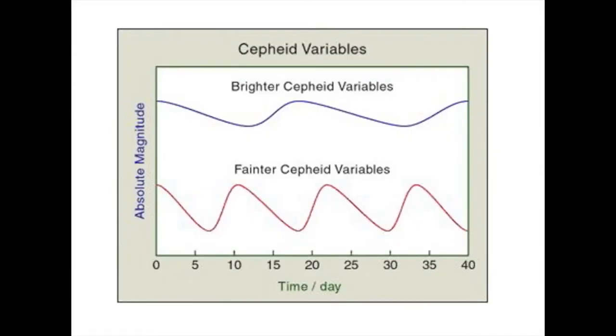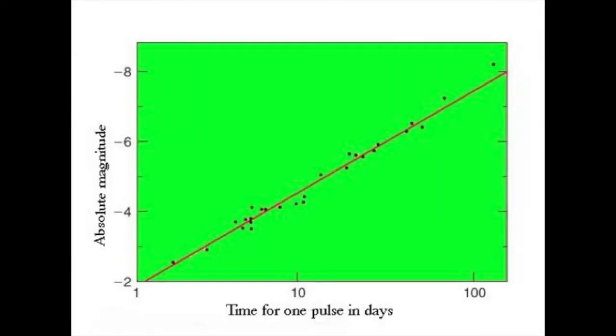Just over 100 years ago, in 1908, the astronomer Henrietta Swan-Leavitt discovered that there was a mathematical relationship between the pulse rate of a Cepheid variable and its absolute magnitude.